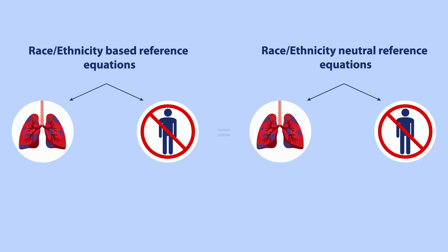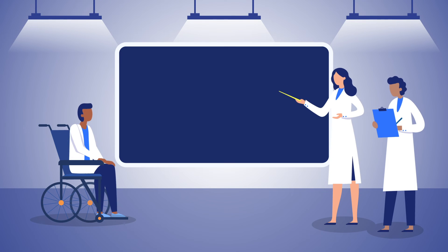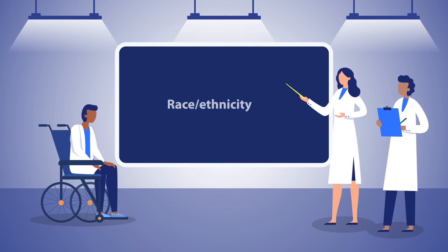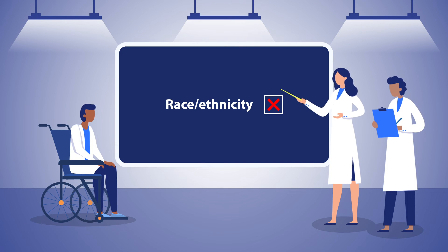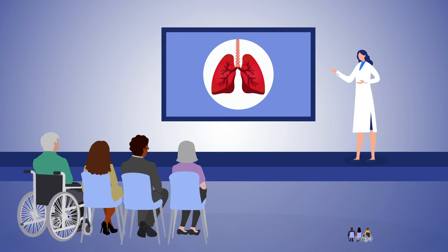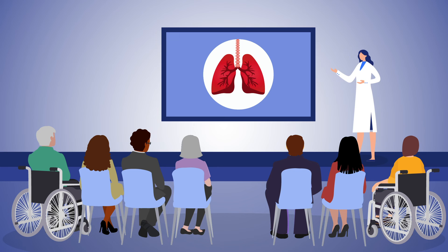They found no evidence to support that FEV1 and FVC values calculated using race and ethnicity-based reference equations improved the prediction of incident chronic lower respiratory disease events and all-cause mortality. These findings indicate that clinicians should reconsider the use of race and ethnicity-based spirometry equations and adopt contemporary race and ethnicity-neutral approaches to conduct spirometry assessments for populations of different ethnicities.